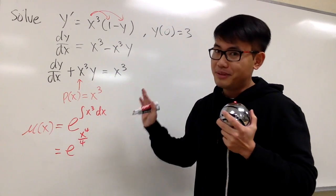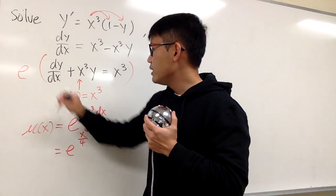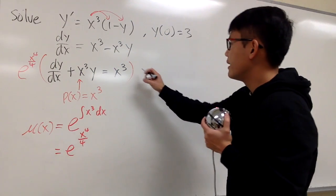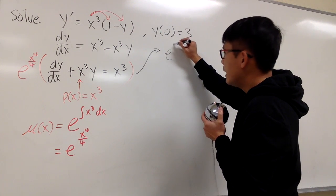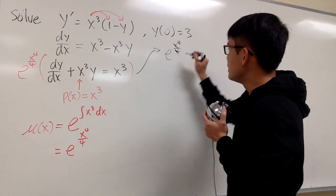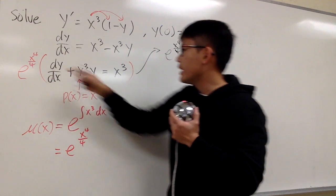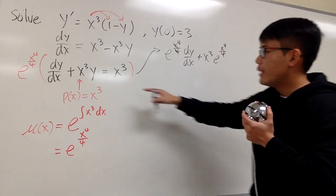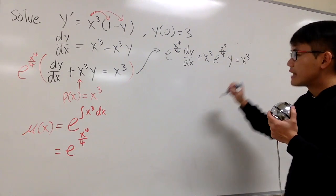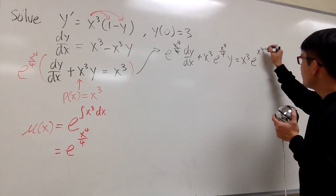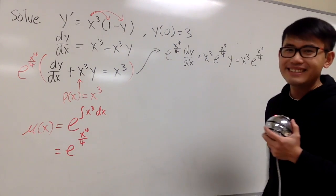Don't worry about the plus C — this is all we need. So right here, I will multiply everything by the integrating factor: e to the x to the fourth power over 4. Let me put it down here so I have more space. This times that is e raised to x to the fourth power over 4, and we have dy/dx. Then we add it with x to the third power times e to the x to the fourth power over 4 times y. On the right-hand side, this is equal to x to the third power times e to the x to the fourth power over 4.